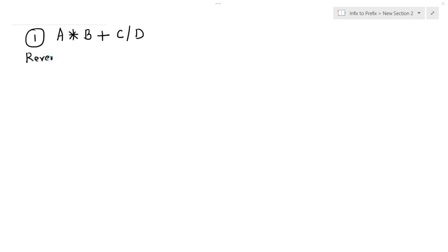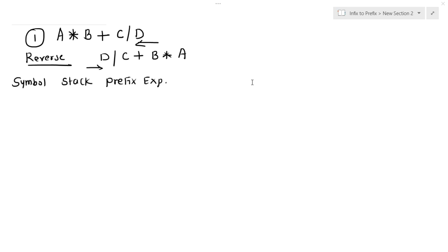Let's solve the above expression. First, reverse it — scanning from right to left gives us: d divided by c plus b multiplied by a. Now solve the reversed expression. Scanning from the first symbol: d is an operand, so it goes into the prefix expression. Division is an operator, so it goes into the stack. c is an operand, so it goes into the prefix expression.